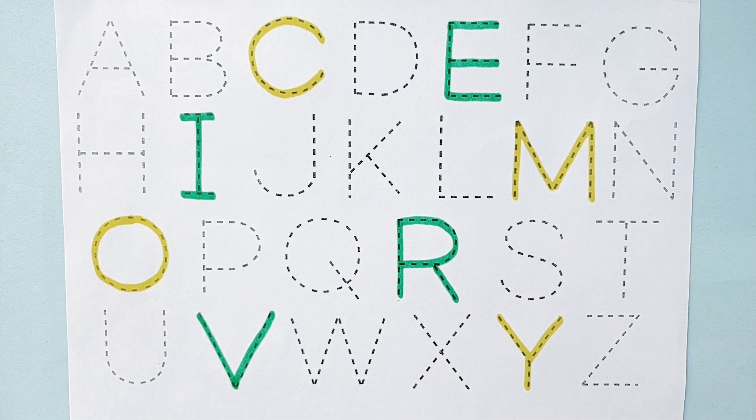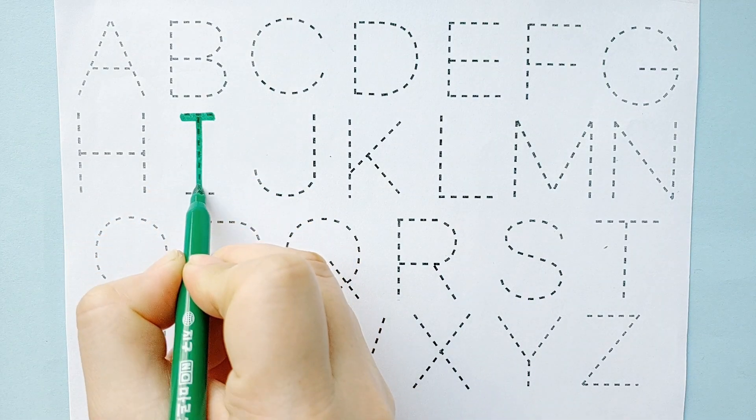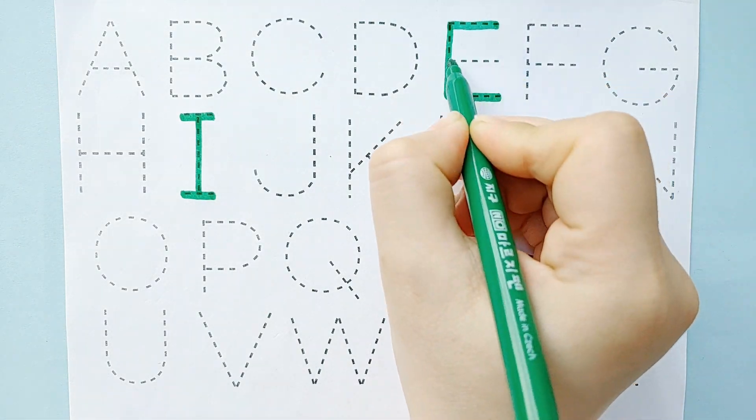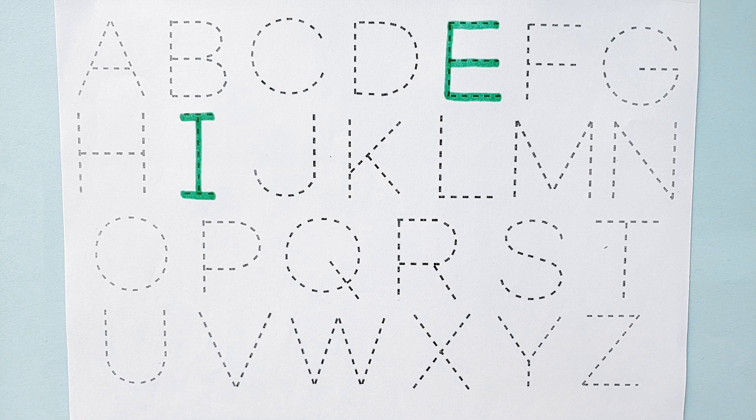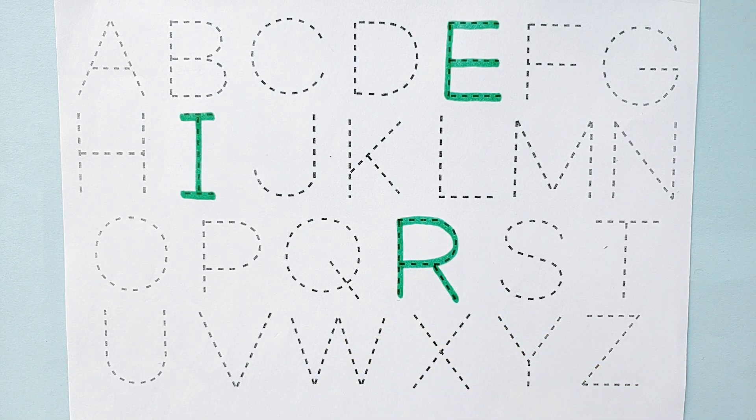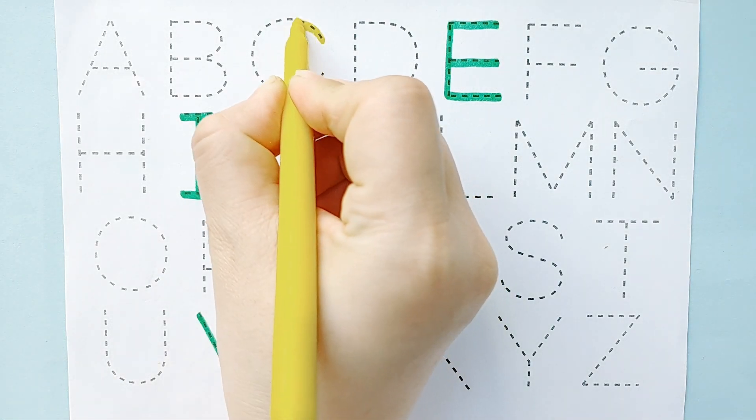A, B, C, D, E, F, G, H, I, J, K, L, M, N, O, P, Q, R, S, T, U, V, W, X, Y, and Z. Now I know my ABCs. Next time won't you sing with me.